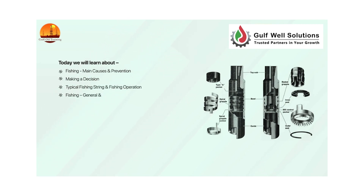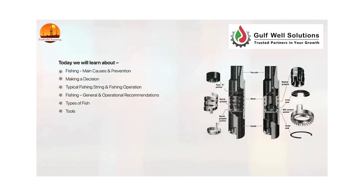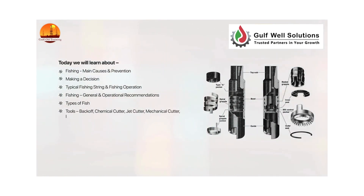Fishing: general and operational recommendations, types of fish, tools, backoff, chemical cutter, jet cutter, mechanical cutter, impression block, and fishing junks, magnets, reverse circulating basket, etc.